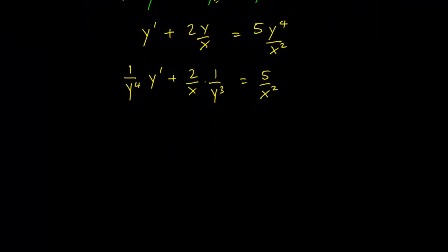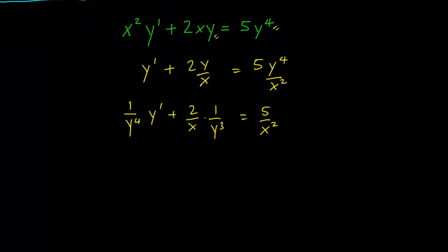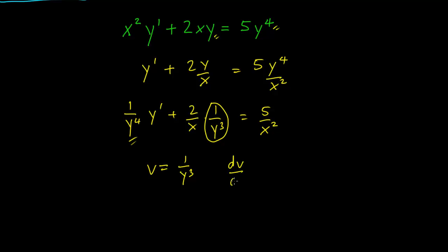Now, the Bernoulli substitution method involves getting rid of this middle y term over here and using the chain rule to eliminate the y to the fourth term over here. So let's take v equals 1 over y cubed.